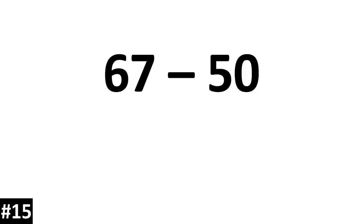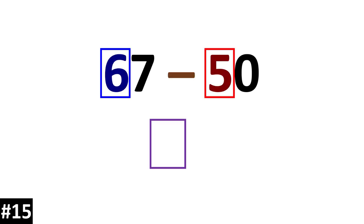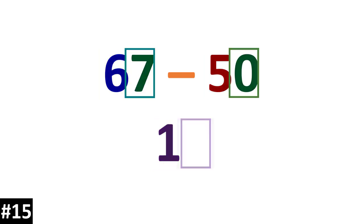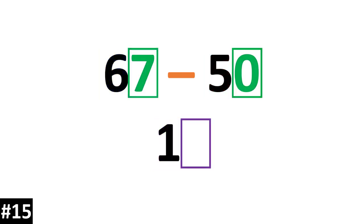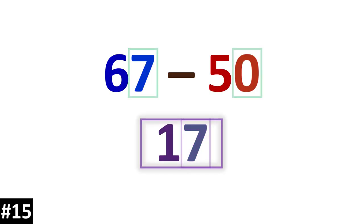How about 67 minus 50? 6 10s minus 5 10s is 1 10. We look to the ones: 7 minus 0 is 7. So our answer is 17.